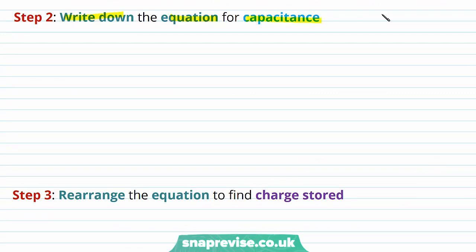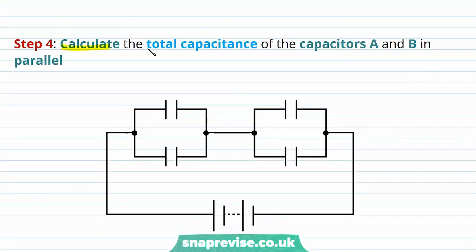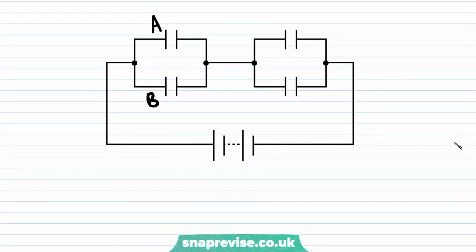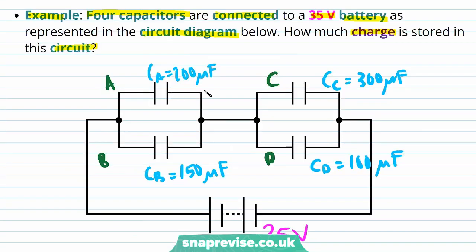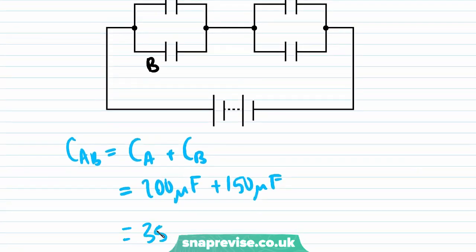Step 3: rearrange the equation to find the charge stored — multiply both sides by V to get Q = CV. Step 4: calculate the total capacitance of capacitors A and B in parallel. We call this CAB = CA + CB = 200 µF + 150 µF = 350 µF.